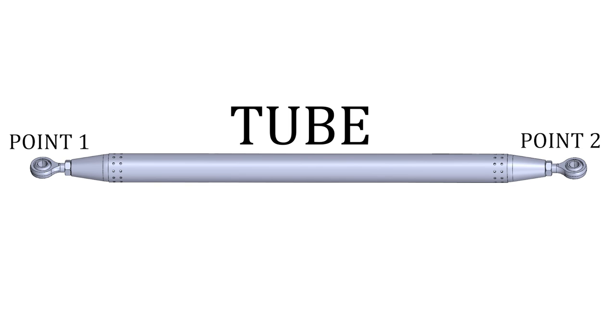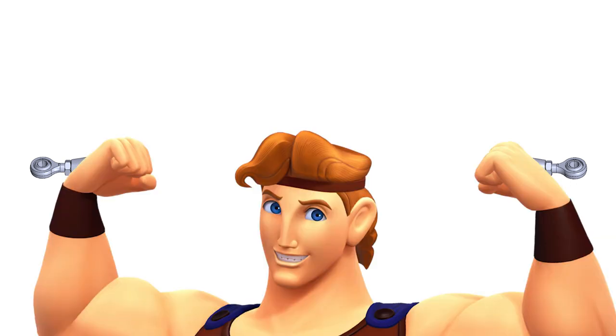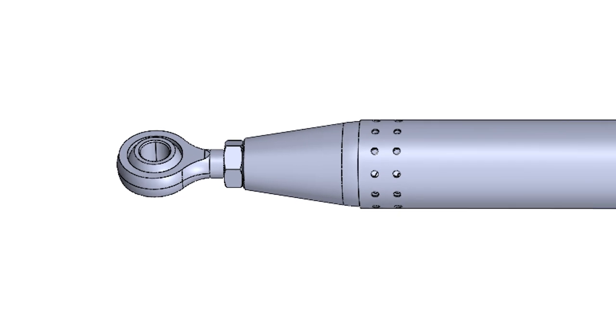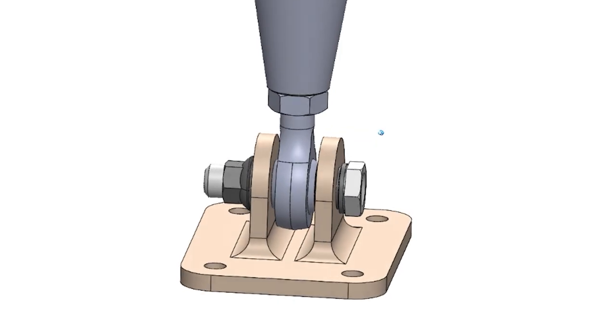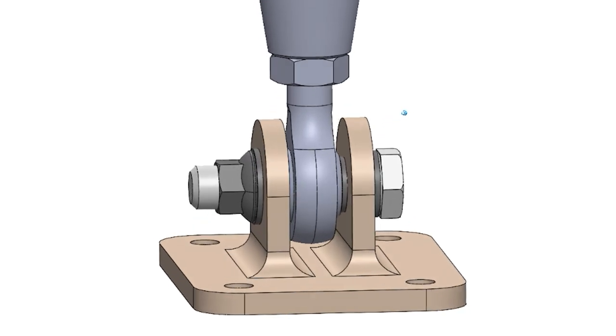A typical strut is going to be a tube connecting two points on either end. In actuality, what's between the two points is completely irrelevant, only the distance between them that matters. A strut would still work the same whether it's an aluminum tube or Hercules holding two ball joints at the same distance. So what are these ball joints?